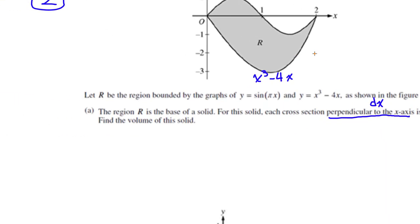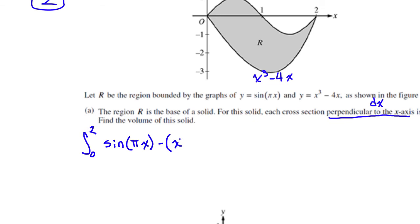Find the volume of the solid — it's just top minus bottom squared. It's going to be the integral between 0 and 2 of top, which was sine of πx, minus the bottom — you need parentheses because you need to distribute that negative, so be careful. x to the power of 3 minus 4x, and this entire quantity squared dx.